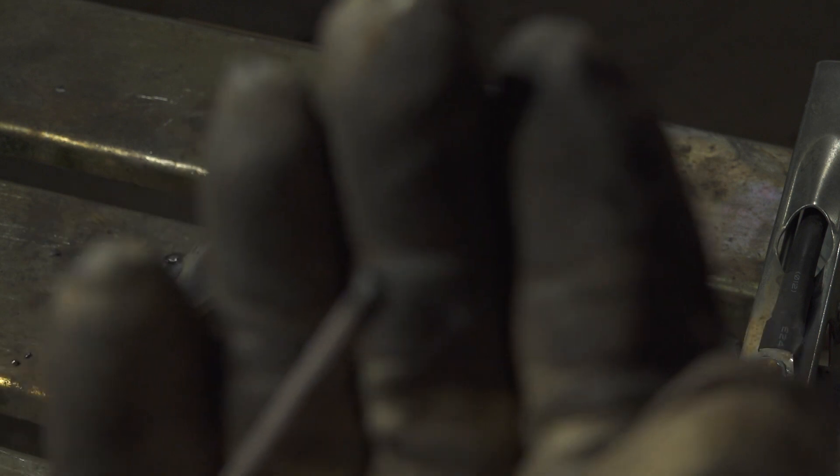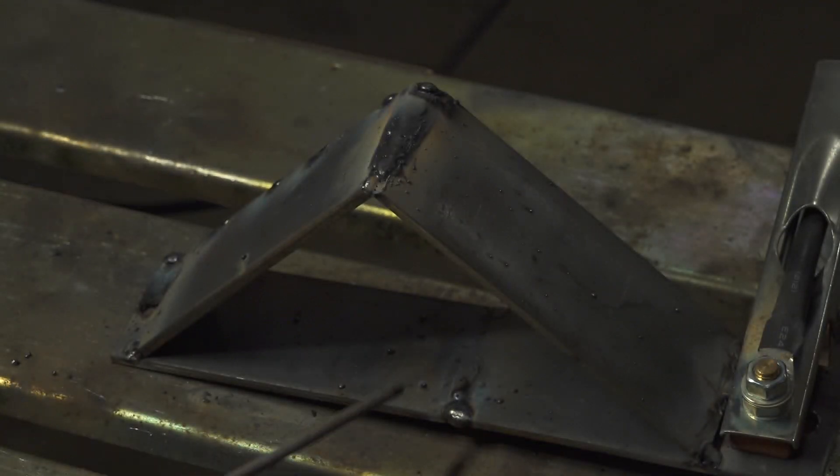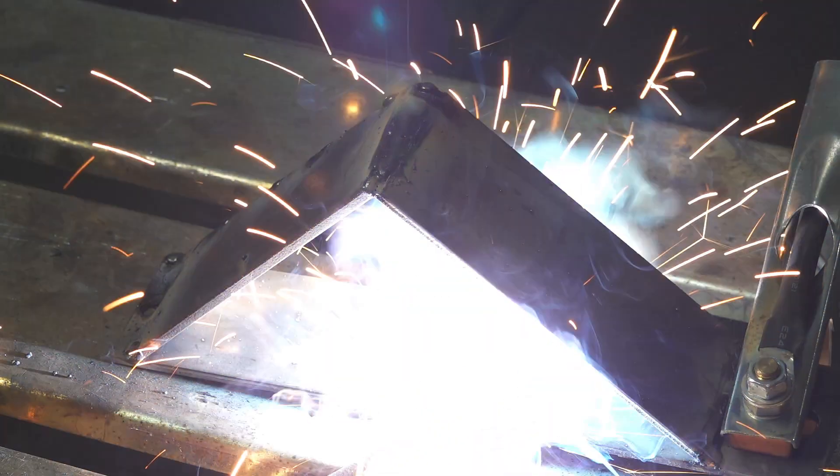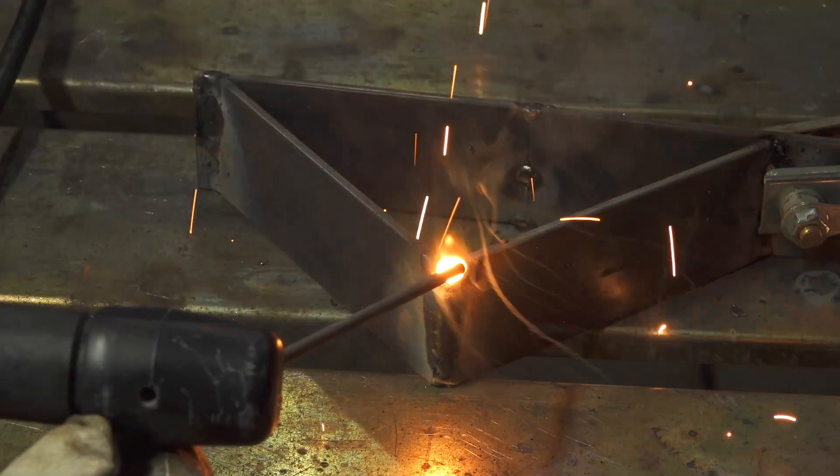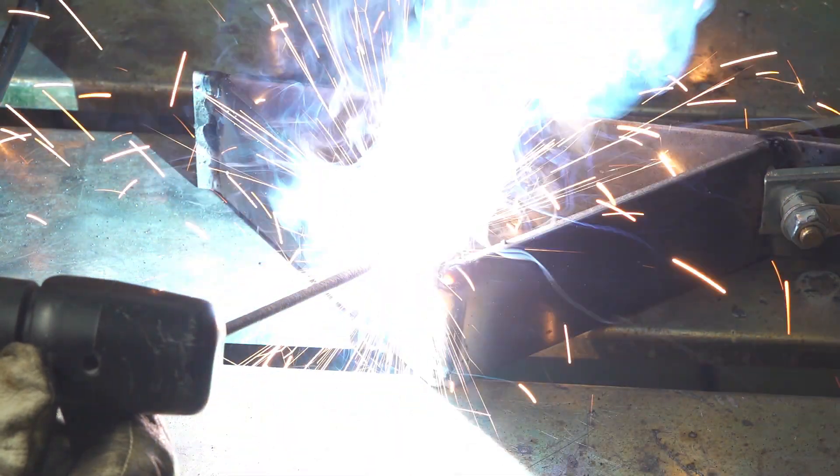When the rod is burnt up into the flux a little bit, it's almost impossible to stick the rod if you have it set anywhere near hot enough. At that point, you don't even really have to strike an arc, you just press the rod against the metal, and if the arc doesn't start right away, rock it or tap it a little, and it'll light right up.